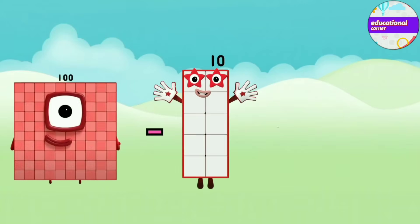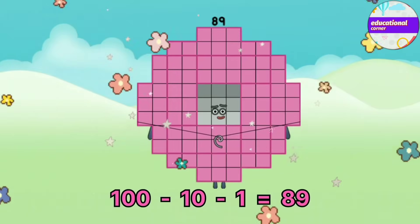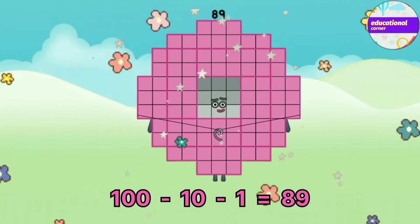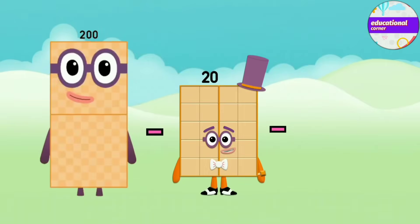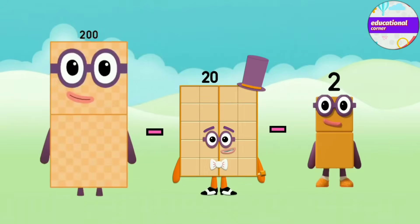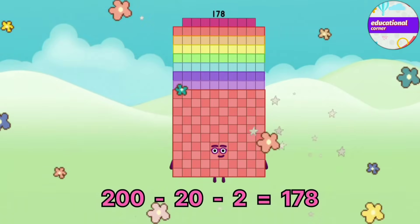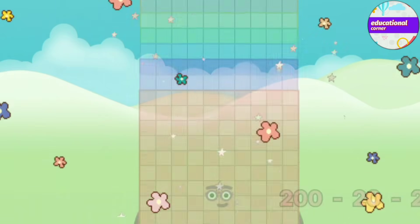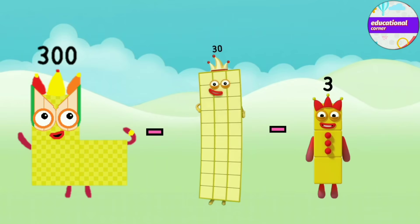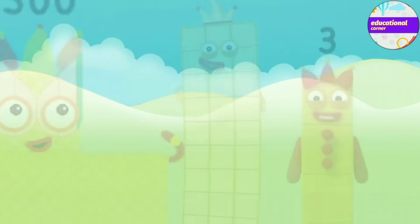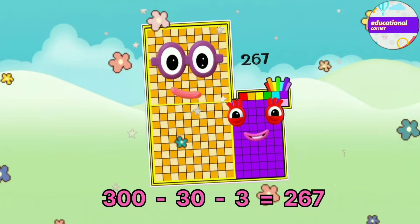100 minus 10 minus 1 equals 89. 200 minus 20 minus 2 equals 178. 300 minus 30 minus 3 equals 267.